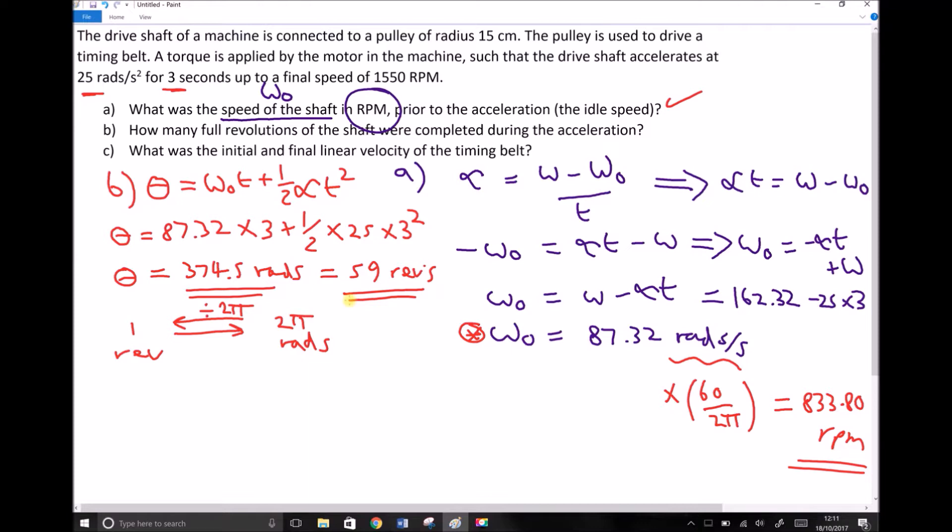And the question clearly states how many full revolutions of the shaft were completed during the acceleration. The answer is 59 to the nearest whole number. So we've done part b.